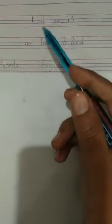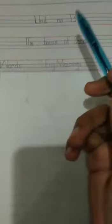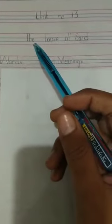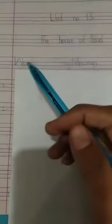Here you will write Unit Number 13. Next you will write the name of unit: The House of Sand. Then you will make two columns, one for words and second for English meanings. Now our sketch is ready.